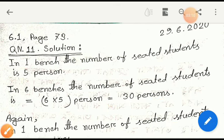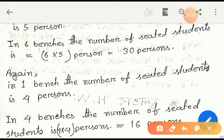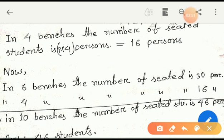Now again, we have to write out: in one bench, the number of seated students is four persons. In four benches, the number of seated students is four into four persons equals how many? Yes, sixteen persons. Okay.